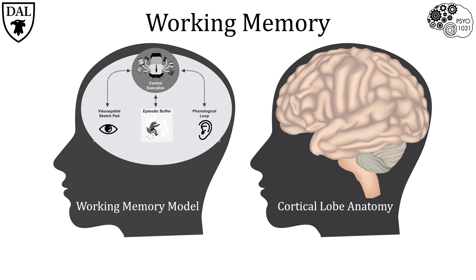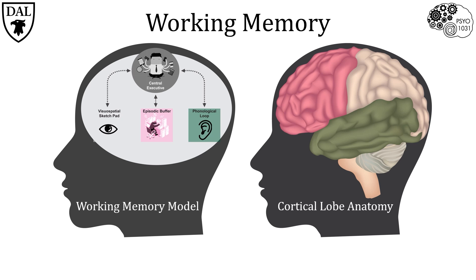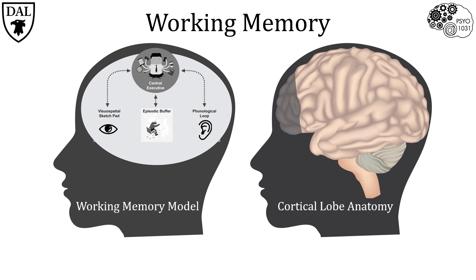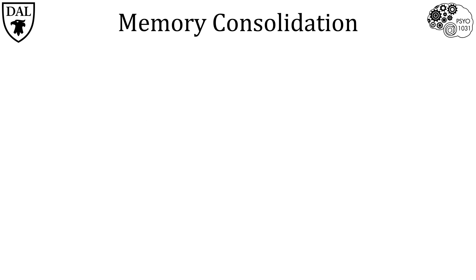Let's consider the Baddeley working memory model. When you are picturing things or images in your mind, you're engaging your visuospatial sketchpad and using your occipital lobe. Repeating things or talking to yourself in your head is the act of engaging the phonological loop, which activates parts of the cortex involved with hearing, speech, and language in the frontal and temporal lobes. The central executive that plans and organizes your thoughts is located in your prefrontal cortex.